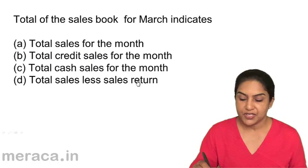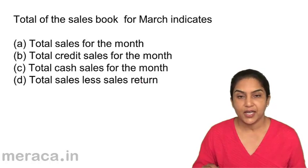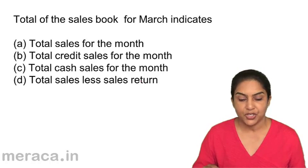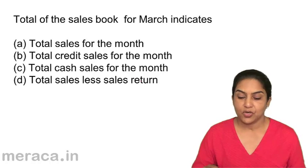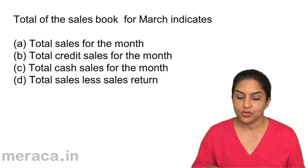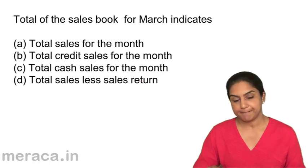Total of the sales book for March indicates: a) total sales for the month, b) total credit sales for the month, c) total cash sales for the month, or d) total sales less sales return.